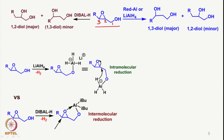If there are reagents that can selectively reduce 2,3-epoxy alcohols to either 1,3-diol or 1,2-diol, the reaction becomes more meaningful and synthetically useful. It is found that if one takes Red-Al or lithium aluminium hydride, both comparable in reactivity, they lead to 1,3-diol as the major product and 1,2-diol as the minor product. On the other hand, if one uses DIBAL for the same reduction, the 1,3-diol is found in minor amount and the 1,2-diol is formed in the major amount.